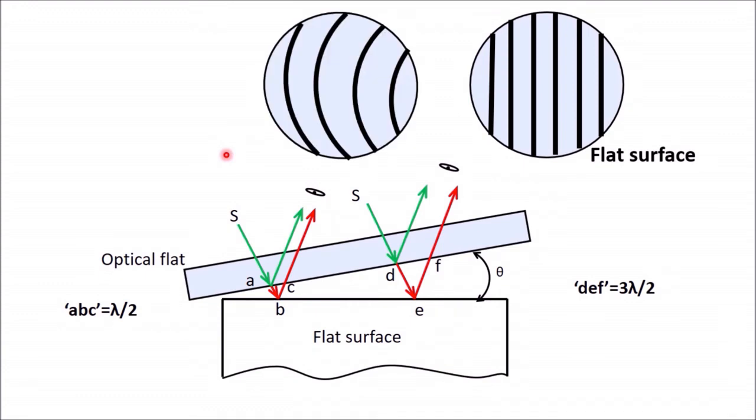When fringes are curved towards the line of contact, the surface is concave and low in the centers. This surface will be concave in nature, so this represents a concave surface.